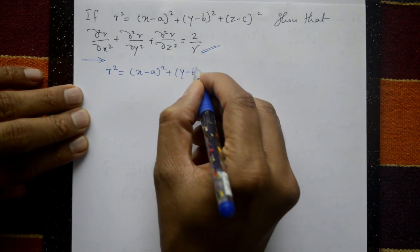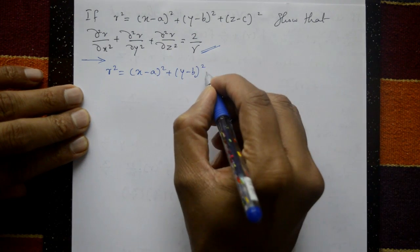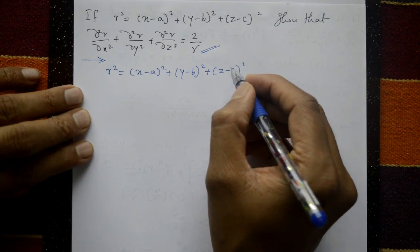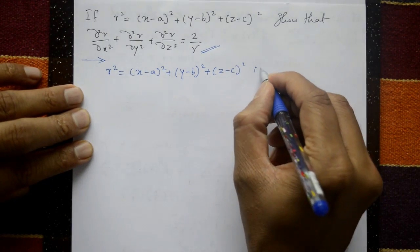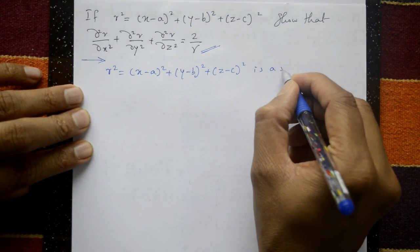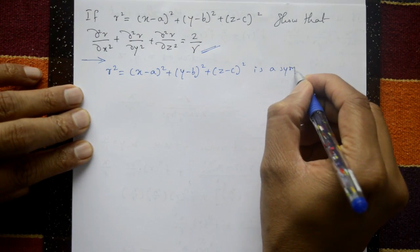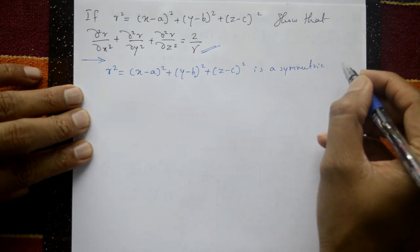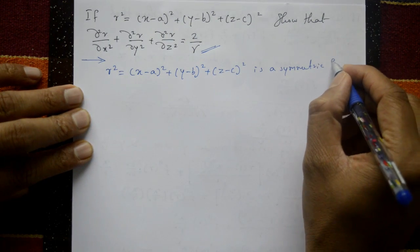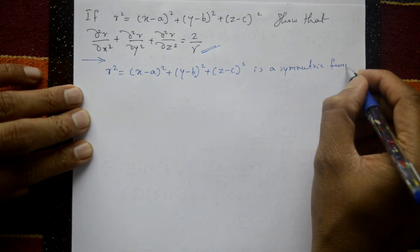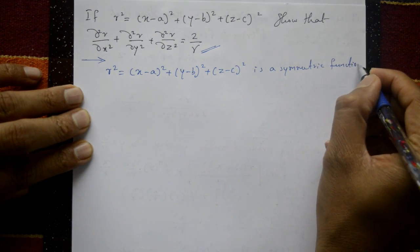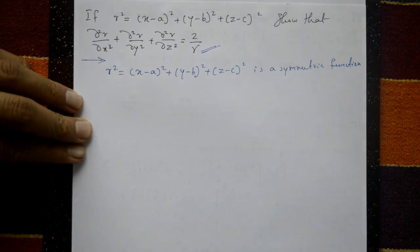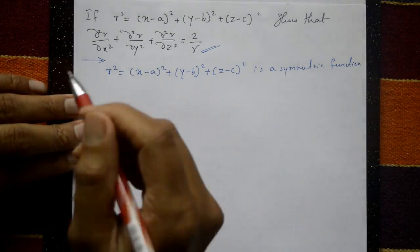Now, r² = (x - a)² + (y - b)² + (z - c)² is a symmetric function of x, y, z. Now differentiate.